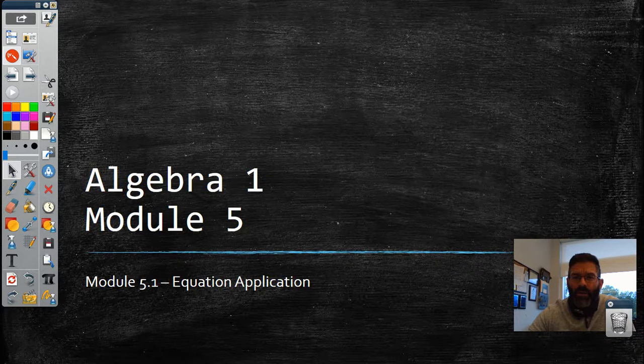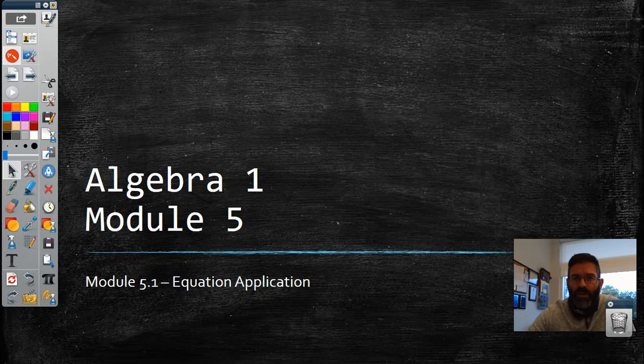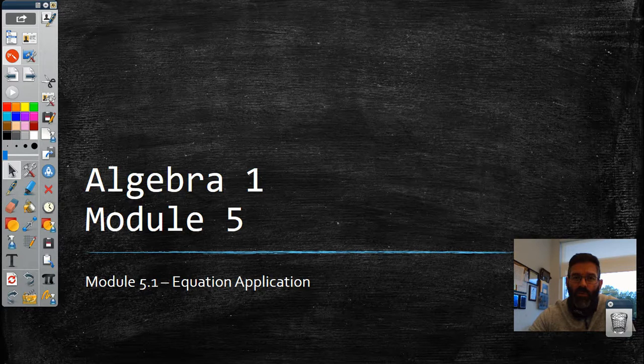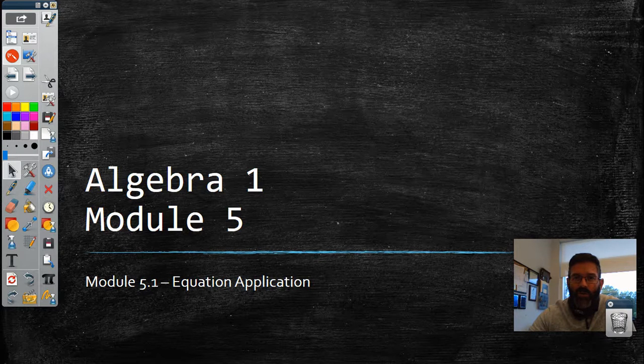Alright, hey guys, it's Mr. Fowler. I'm going to do Module 5, Lesson 5.1 real quick. It's Application of Equations, so we're going to be taking what we learned in Module 4 about equations and we're going to be applying it to word problems. I've got a few examples I'm going to work through and then I'll turn you over to your worksheet. It should be pretty quick.